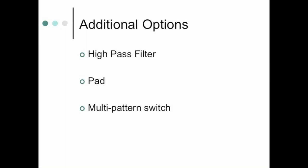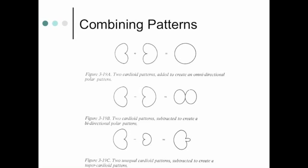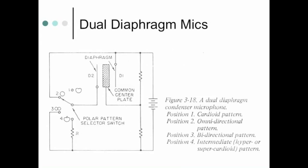All microphones have specialized options depending on the type and manufacturer, such as high-pass filters to eliminate rumble or foot-tapping low frequencies, and a pad to reduce the incoming level so it doesn't distort. Multi-pattern switches let you take one microphone and change patterns. Most good microphones have that option, and some very good microphones actually have two diaphragms inside so you can combine them to create different polar patterns — cardioid, omni, bi-directional, and super cardioid.